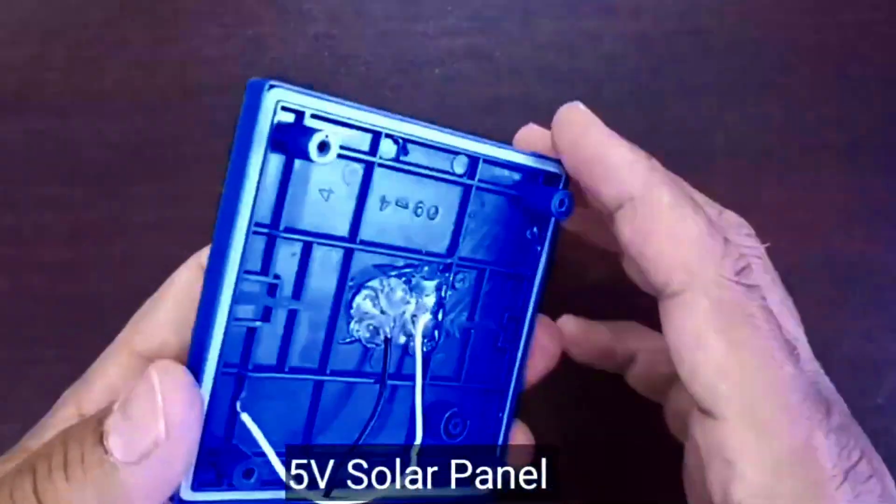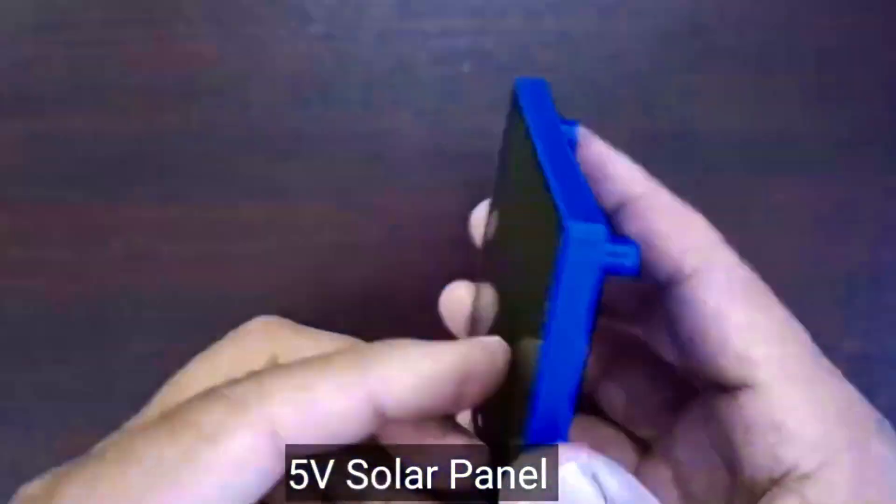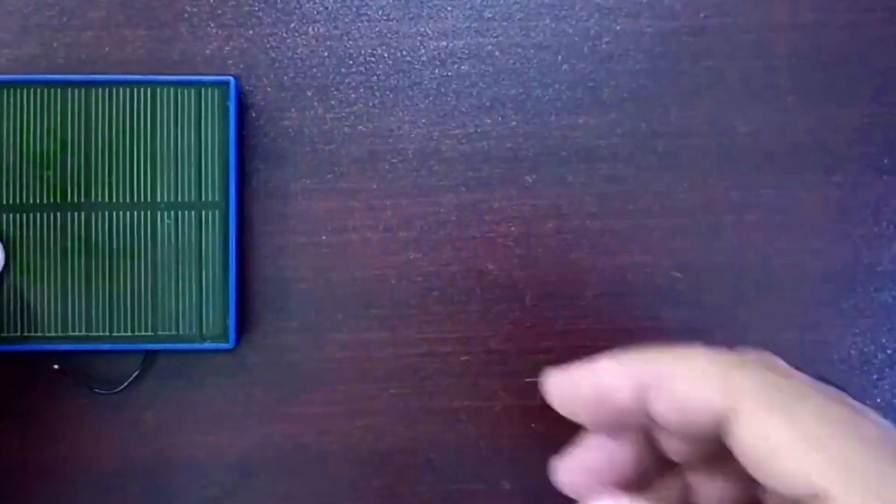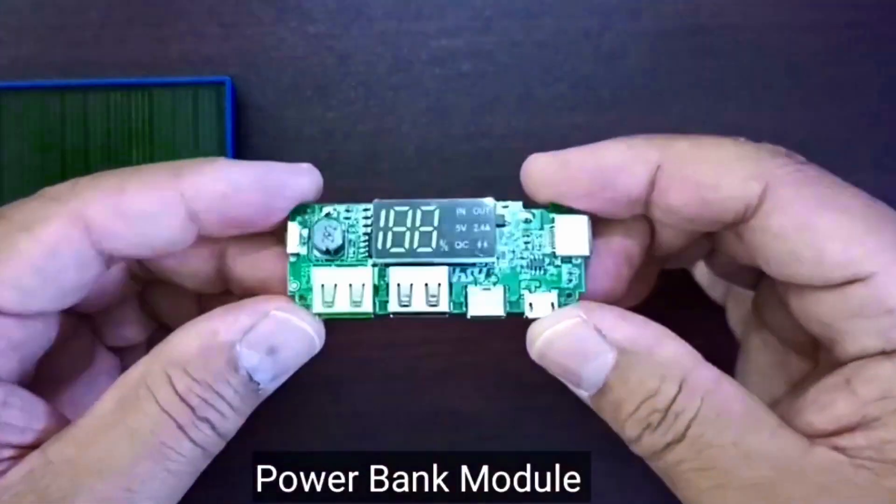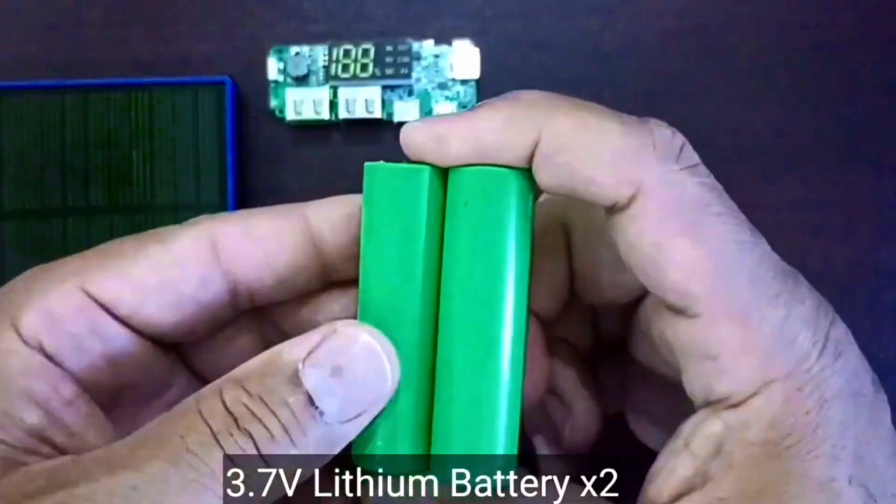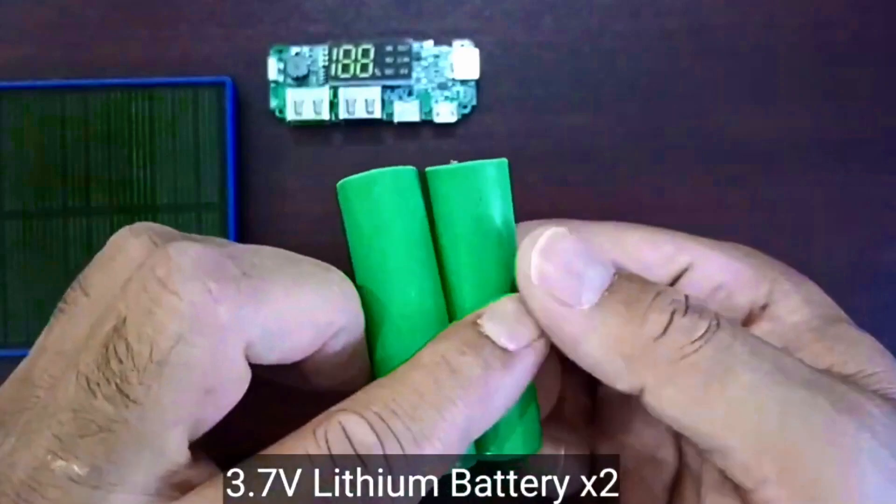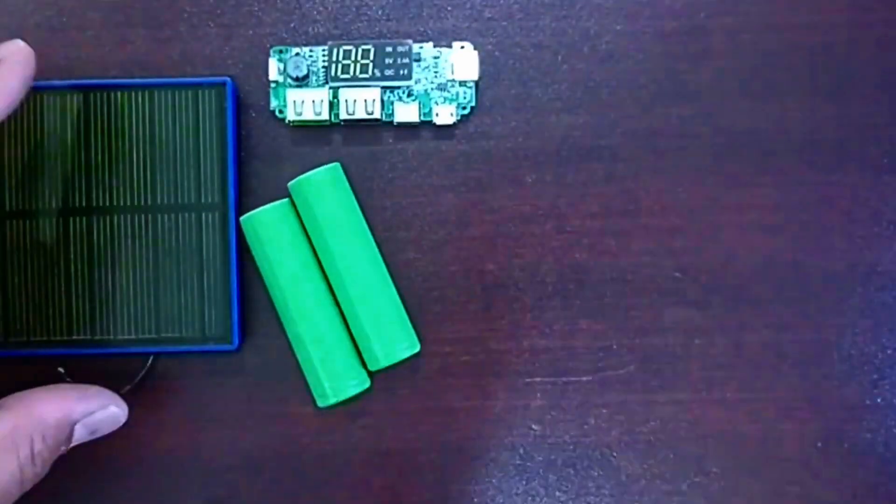Today we're building a DIY solar power bank starting with this little 5 volt solar panel. This tiny module will handle charging. We'll pack the power inside two 3.7 volt lithium batteries wired in parallel, and to keep it safe everything's going inside this red plastic box.